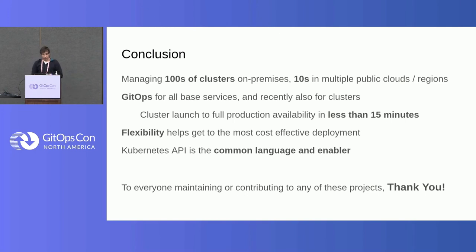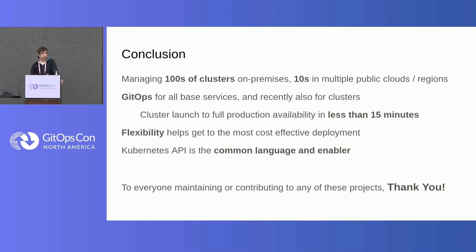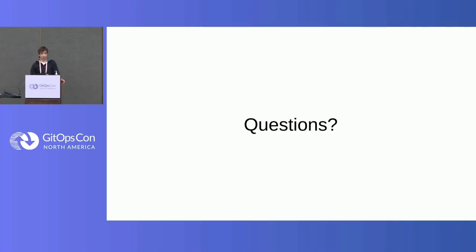GitOps is the key for us to be able to manage hundreds of clusters on-premises, thousands of deployments, and tens of clusters already on multiple clouds and regions. We use GitOps for the base services, but we started using it for the clusters themselves. You can add a cluster to our infrastructure on any public cloud and have it serving production workloads in less than 15 minutes — which is quite an achievement with all the stack we rely on. This flexibility also allows us to have much more cost-effective deployments. The Kubernetes API is really the common language and all the ecosystem is the enabler for all of this — so if you are maintaining and contributing to any of these projects, you are helping us in a huge way.